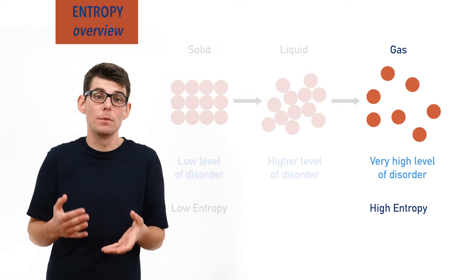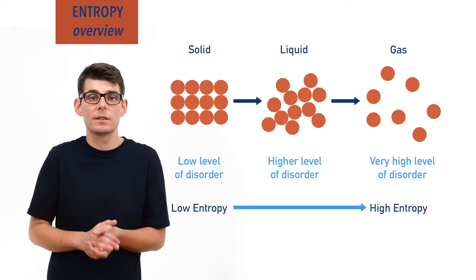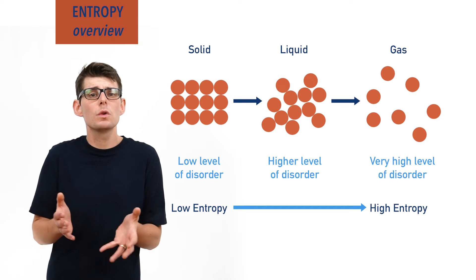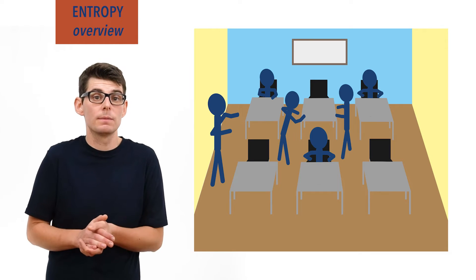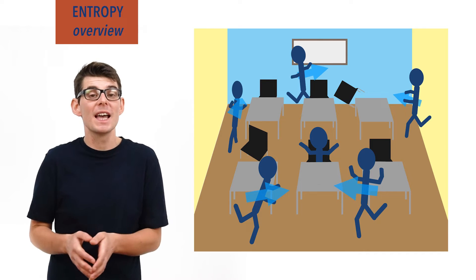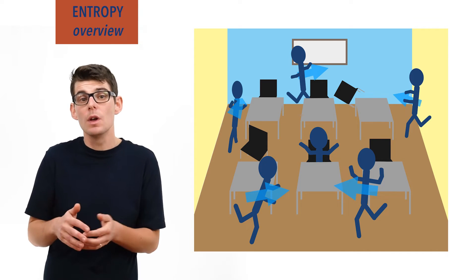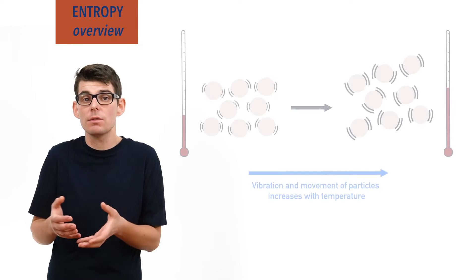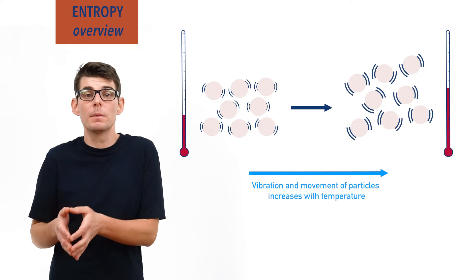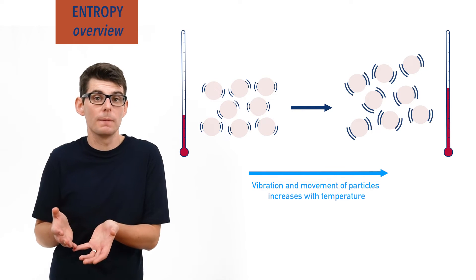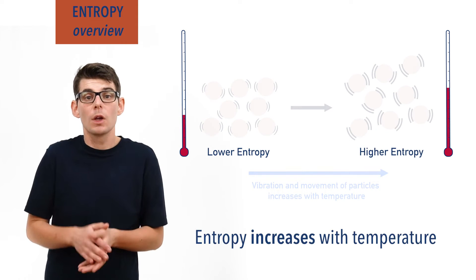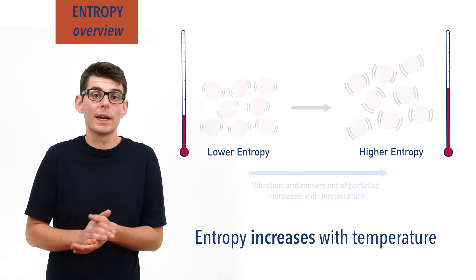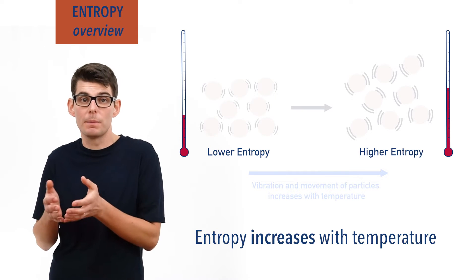The less the particles can move in a system, the less the potential disorder of that system. Think of a school classroom with children in: the slower they move, the more ordered it is; the faster they run around, the more disordered and chaotic it becomes, even though the number of children is the same. As the movement of particles increases with temperature, the higher the temperature of a system the greater its potential disorder, meaning entropy increases with increases in temperature. A warm gas will have a higher entropy than a cooler gas, assuming the same number of particles for both.